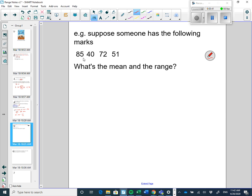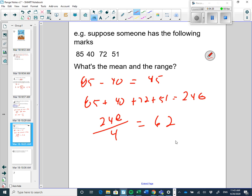Suppose someone has the following marks: 85, 40, 72, 51. Again, what's the mean and the range? So the biggest one is 85, the smallest one is 40. That's a huge range. The range is 45. They have a wide variety of marks. The mean: 85 plus 40 plus 72 plus 51 is 248. Take 248, make sure you hit equals and divide by 4. The average is 62. The average is 62, the range is 45. That means that these marks are all over the place.